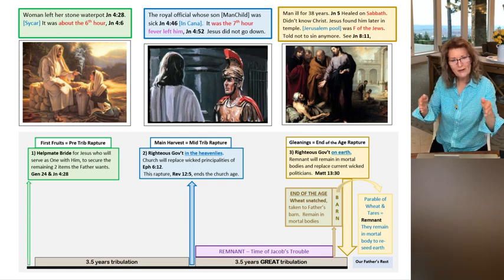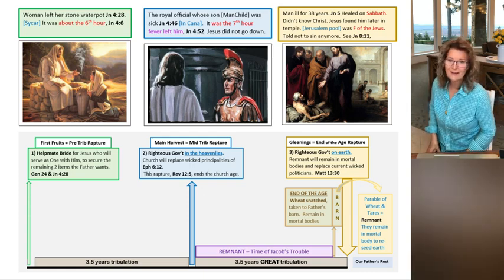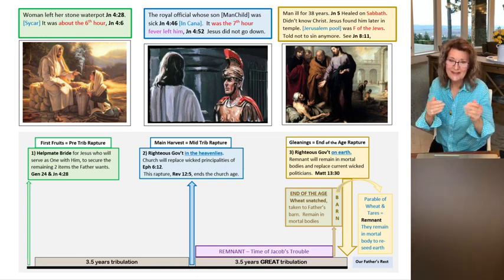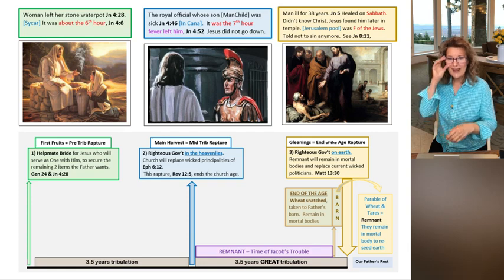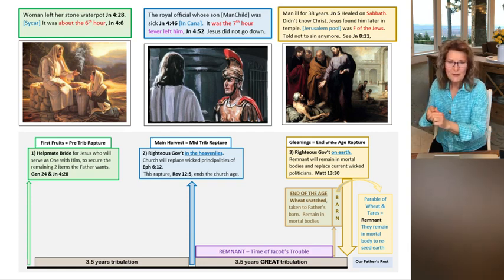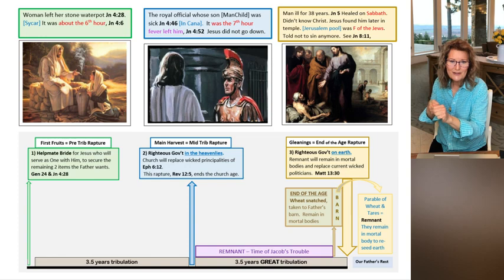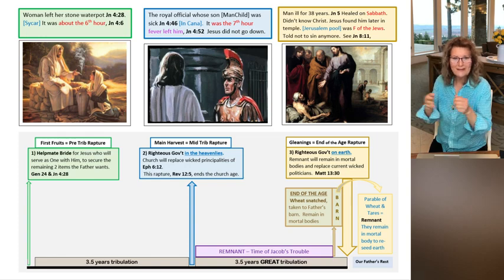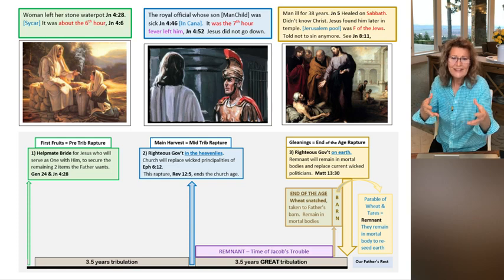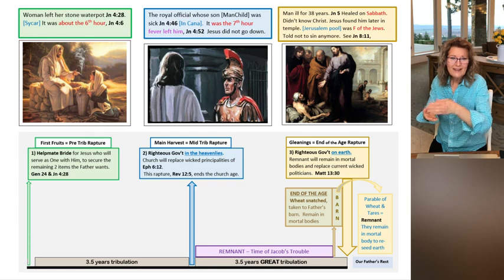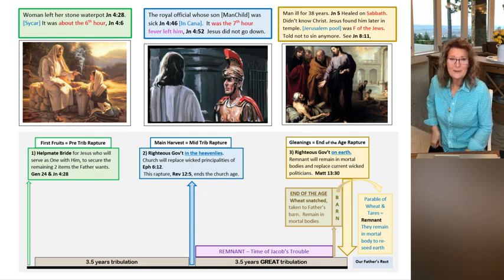This is exactly what Jesus was doing. As we watch him for three and a half years in the gospels, he was acting out Daniel's 70th week. He was acting out the pre-trib rapture of the bride, the mid-trib rapture of the church, the government of God. And then he was acting out the remnant being gathered in one place and they're all sick and downcast and ill and they have no man to help them. And then he was going to heal them.